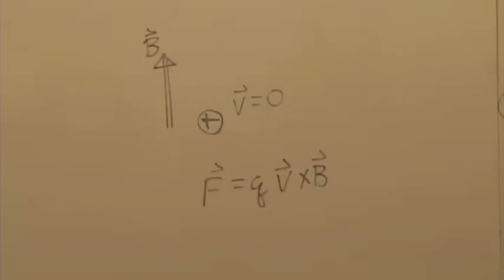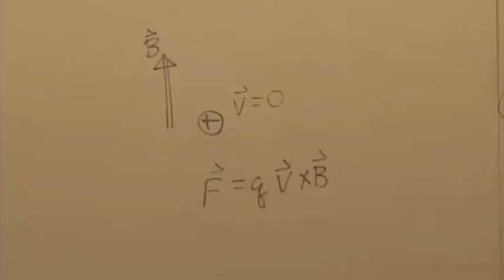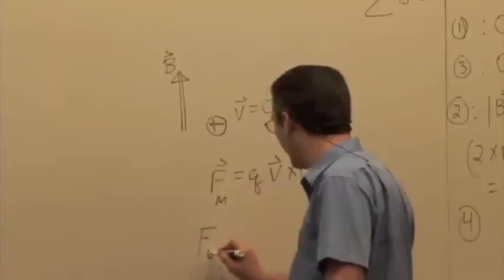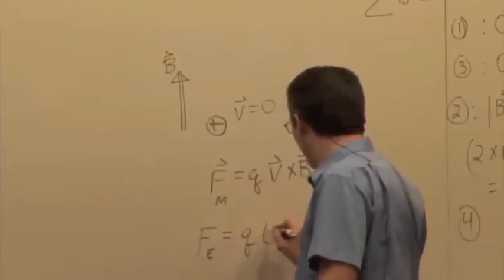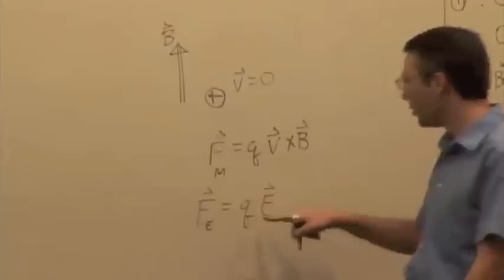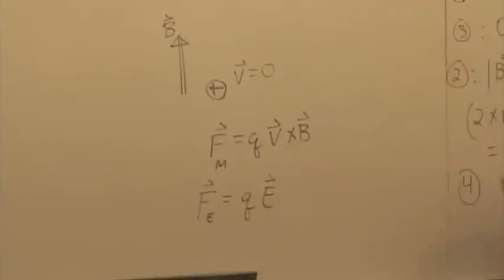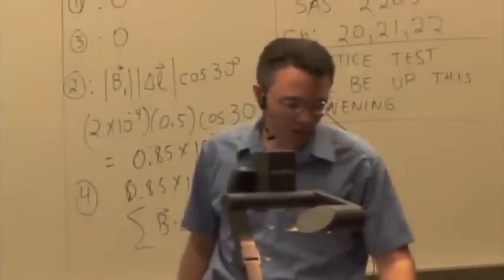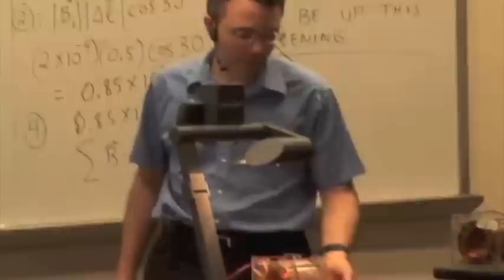Instead, we need an electric field. Someone said a potential difference, but behind a potential difference we have an electric field, because electric forces can drive charges. Electric forces are Q times E, so as long as you have an electric field, you can get the force to accelerate the charge in that direction — or the opposite direction for negative charges. So somehow there is an electric field associated with a magnetic field that's changing.